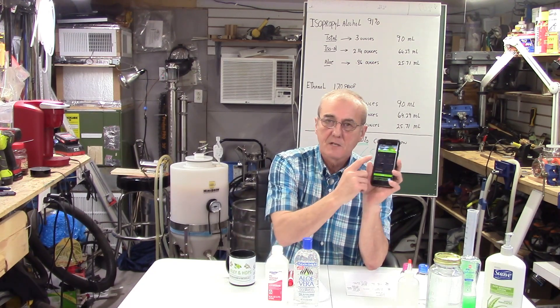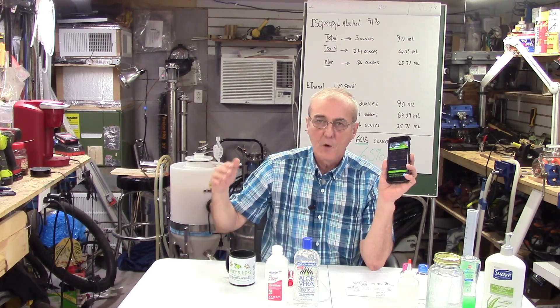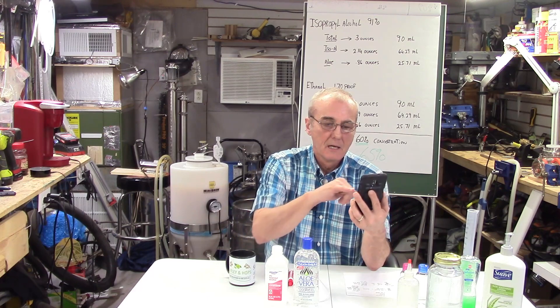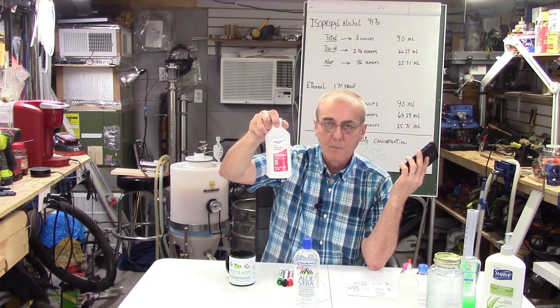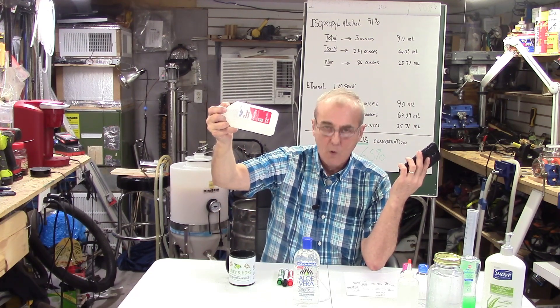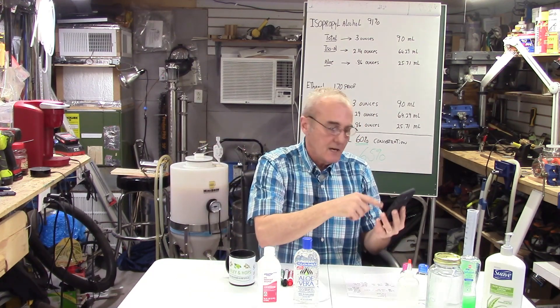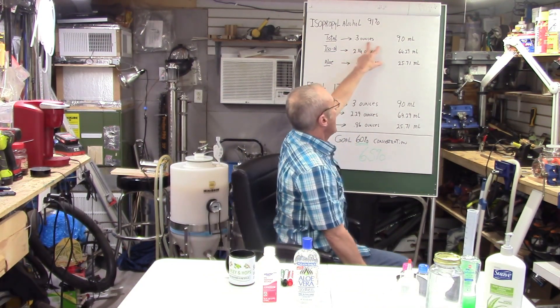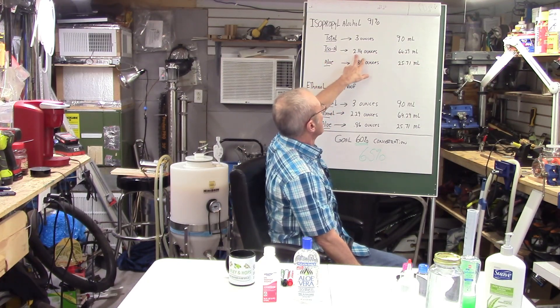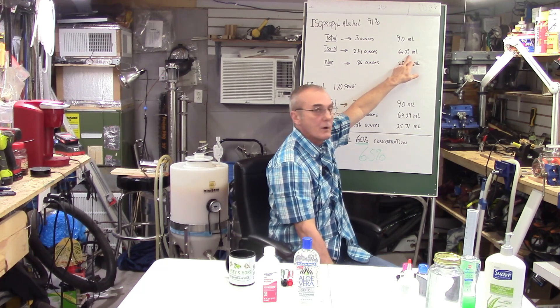This one is the target volume dilution calculator. And what I've done is I've selected, in this particular case, ounces. And I've done this in milliliters as well because you can select either one. And I've got three ounces. My final desired proof is 130 proof. Half of 130 is 65, 65%. And my beginning concentration for the isopropyl is 91%, which is 182 proof. So when I plug those numbers in, if you go to the bottom, it tells you on the bottom what the results are. And the results are, in this particular case, I'd need isopropyl alcohol 2.14 ounces or 64.29 milliliters.